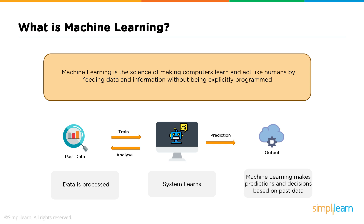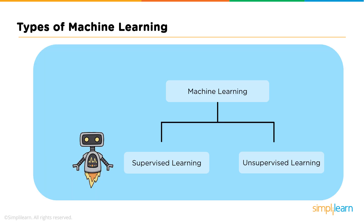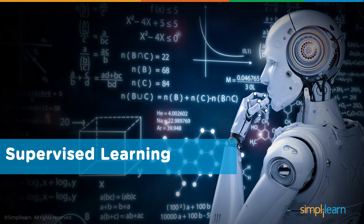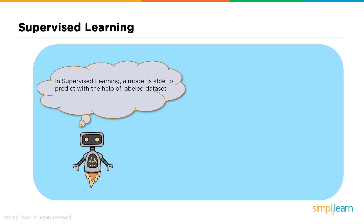Now that you know what machine learning is, let's talk about supervised and unsupervised learning. Supervised learning, as the name suggests, works under supervision — it's a learning in which the machine is trained with data that is well labeled and then predicts with the help of that labeled dataset. Data for which you already know the target answer is called labeled data. For example, I show you an image and tell you it's a dog — that's labeled data.